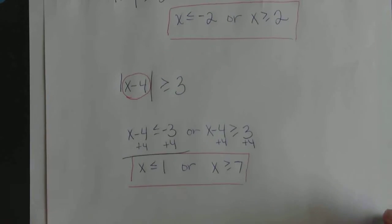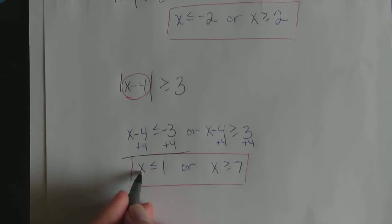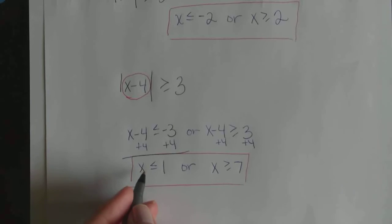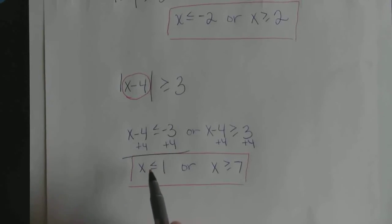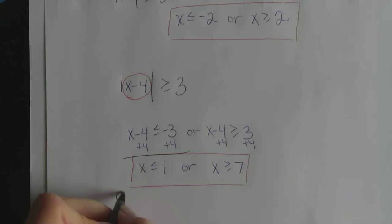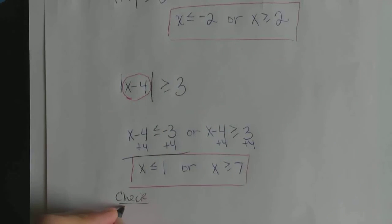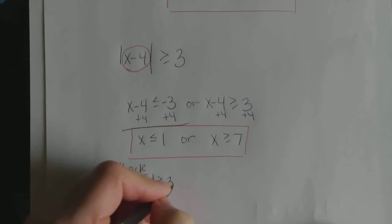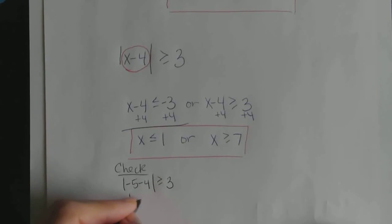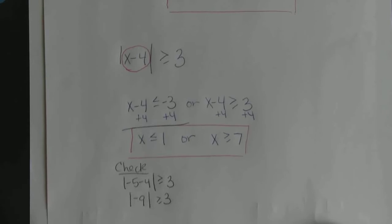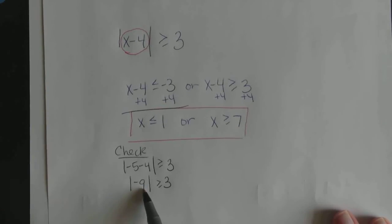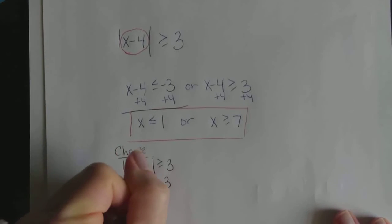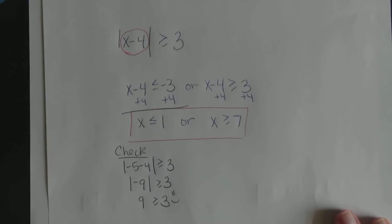Let's check, since this one's a bit more complicated. Let's pick a number less than or equal to 1 — how about negative 5. Substituting into the original: the absolute value of negative 5 minus 4 must be greater than or equal to 3. That's the absolute value of negative 9, which equals 9. And 9 is greater than or equal to 3 — that's true.